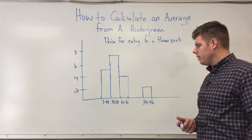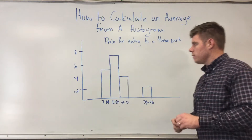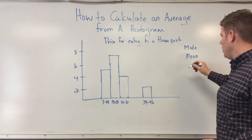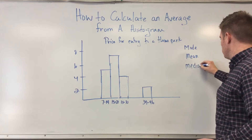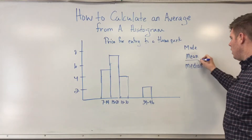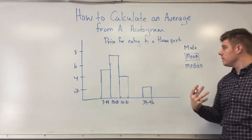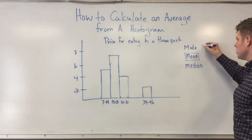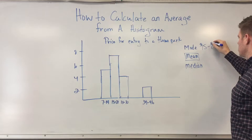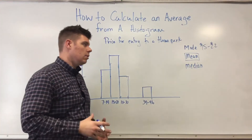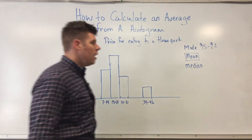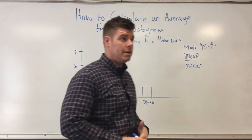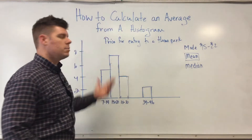When looking at averages we have the mode, the mean, and the median. We're really going to focus on the mean for this video. Calculating the mode is pretty easy — it's just the one with the highest frequency. The mode here would be 15 to 22 dollars. So now let's say it really comes down to cents and dollars for me and I really need to know: within that mode of 15 to 22 dollars, is that what I would expect to pay?